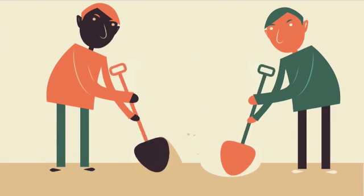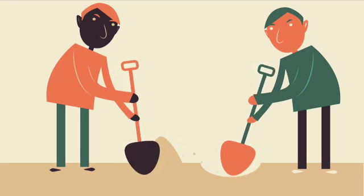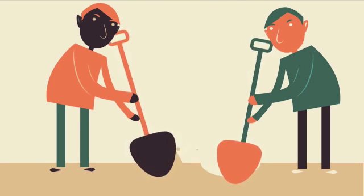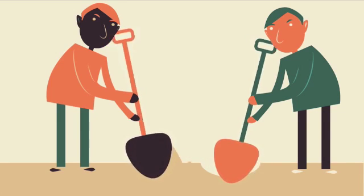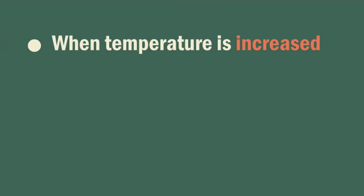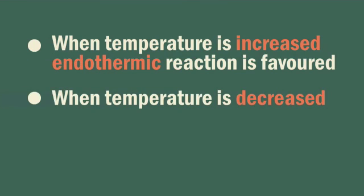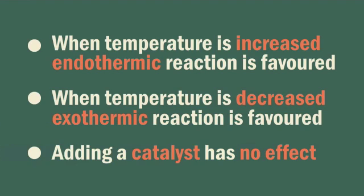Returning to the example of you digging a hole and your friend refilling it — imagine that you are both given much larger shovels. The size of the hole still remains constant, but with each dig or fill, more soil is removed or filled. In conclusion, when the temperature of a system at equilibrium is increased, the endothermic reaction is favored. When the temperature is decreased, the exothermic reaction is favored. Adding a catalyst has no effect on the position of equilibrium.